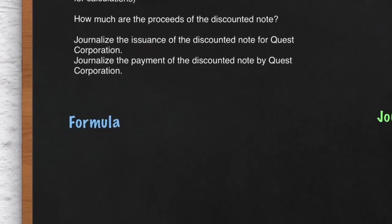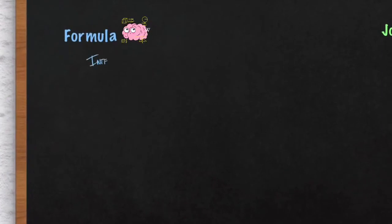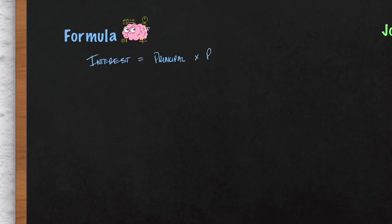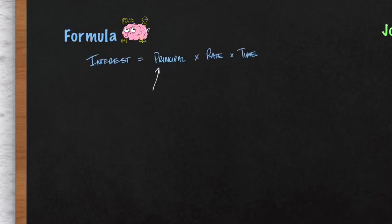With these problems, we have to use the interest formula to be able to record the journal entries. The interest formula is: Interest equals Principal times Rate times Time. The principal amount is how much you borrowed from the lender — the amount borrowed.